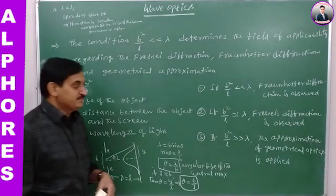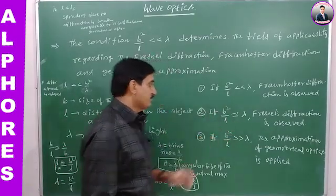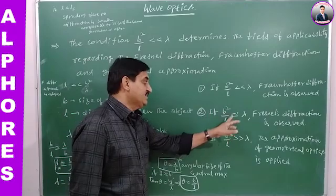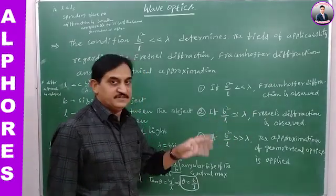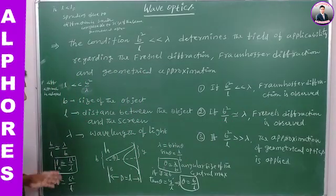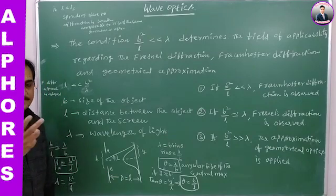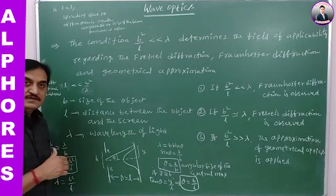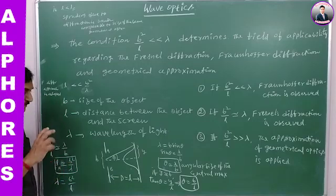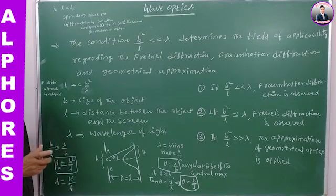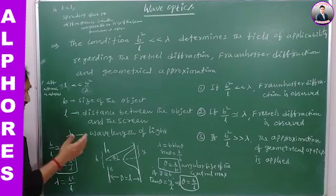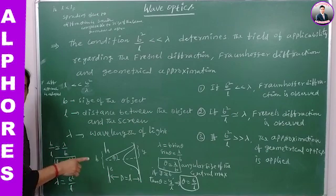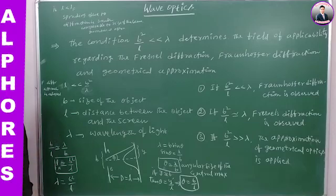The same point is stated as: if B squared by L is almost equal to lambda, then Fresnel's diffraction is observed. LF, the Fresnel separation of the screen from the object, is equal to B squared by lambda. The spreading of light corresponding to the Fresnel diffraction approach is such that the diffraction pattern can be observed on the screen at this Fresnel separation.